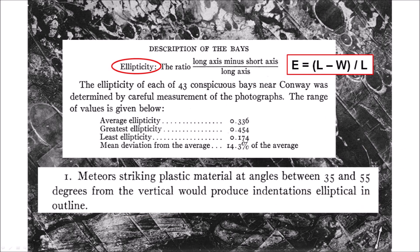Melton and Shriver defined a formula for ellipticity based on the width and length of the bays. This was one of the first applications of mathematics to the Carolina Bays. From the geometry of the bays, the authors concluded that meteors striking plastic material at angles between 35 and 55 degrees from the vertical would produce indentations elliptical in outline. However, further exploration of the Carolina Bays did not find any meteorite fragments or evidence of meteorite impacts.